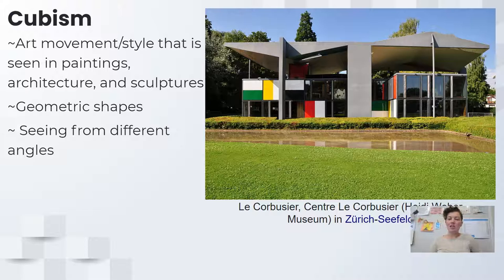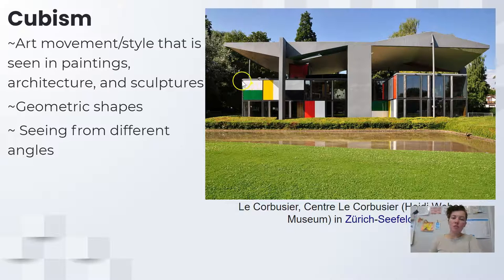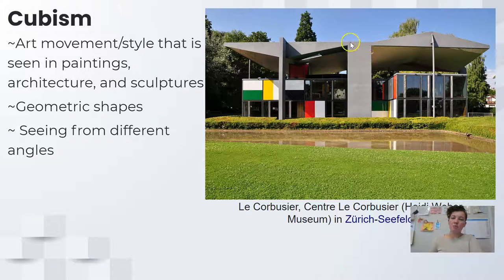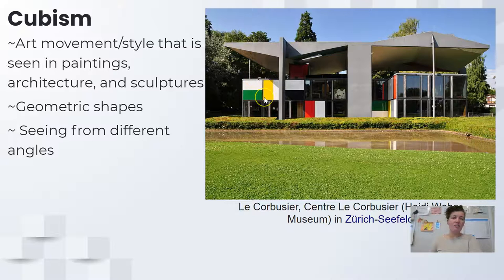A geometric shape other than a circle has points, but a circle is also a geometric shape. Do you see all the points on this building? You've got triangle shapes on the roof. This rectangle shape has points — one, two, three, four. All the windows have points. Lots and lots of rectangles here.